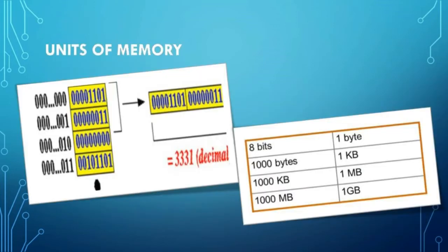Units of Memory. As solids are measured in grams and kilograms and liquids are measured in milliliters and liters, computer memory is measured in bytes. A byte is made up of 8 bits. A bit is a binary digit which represents 0 or 1.